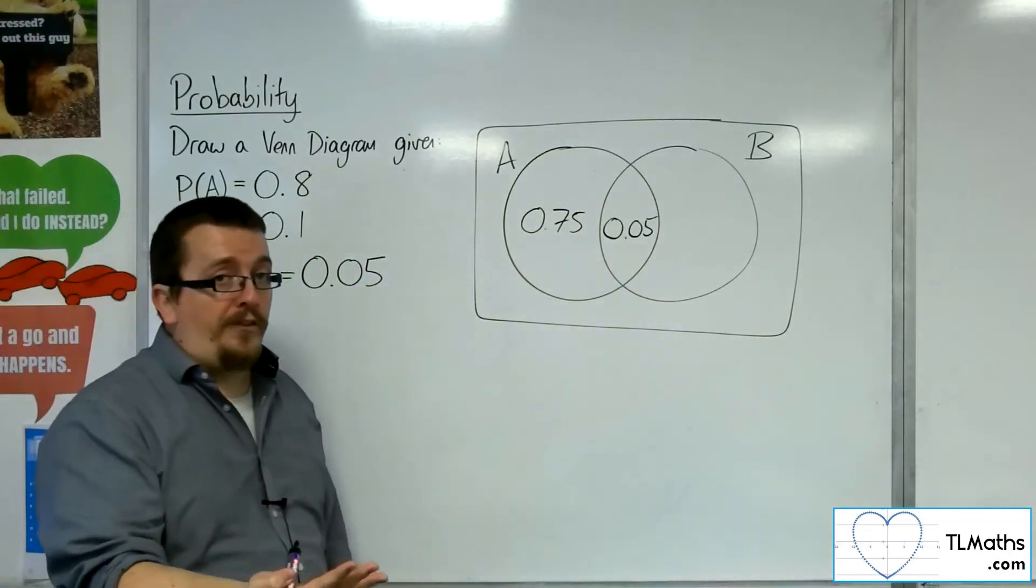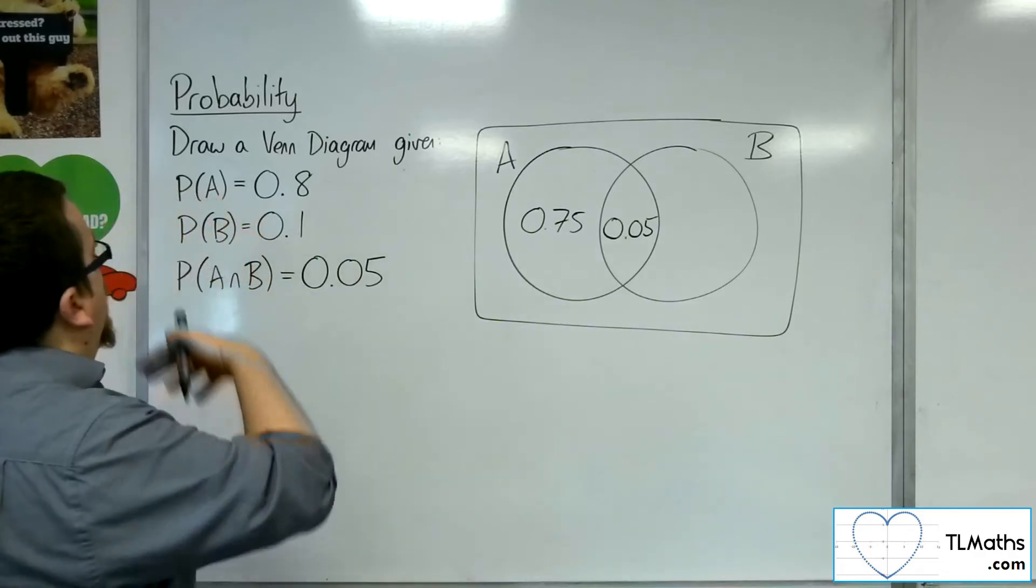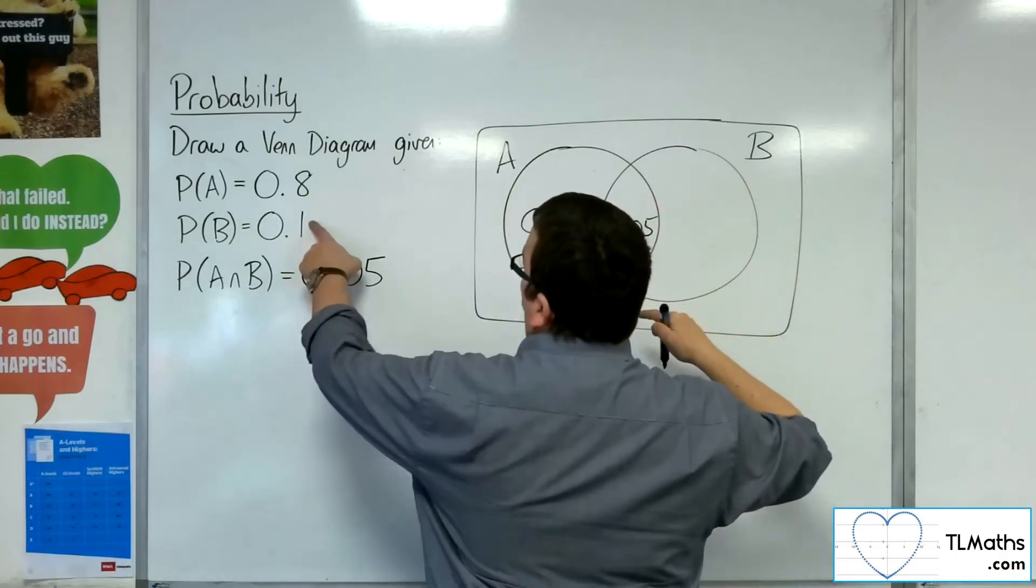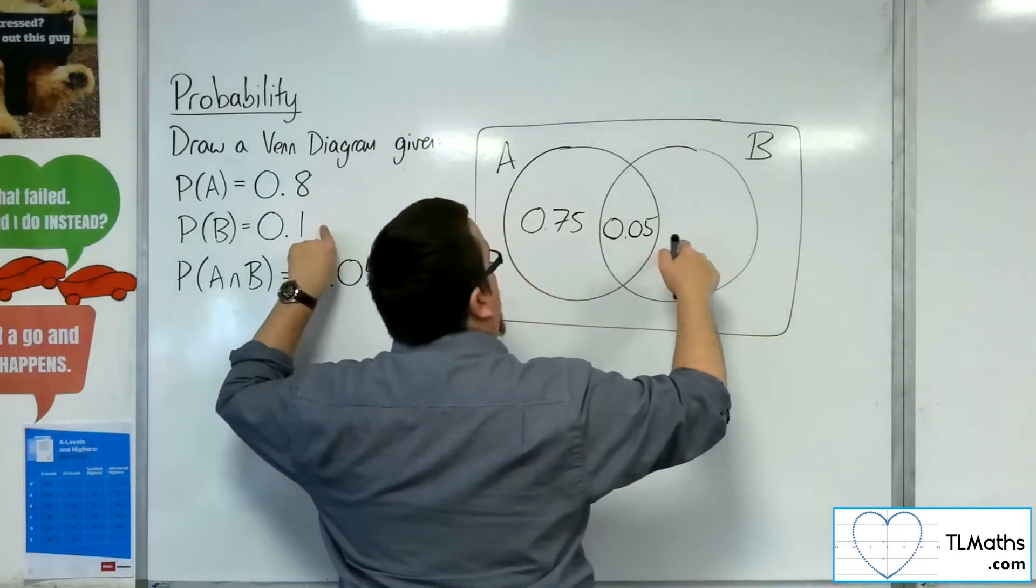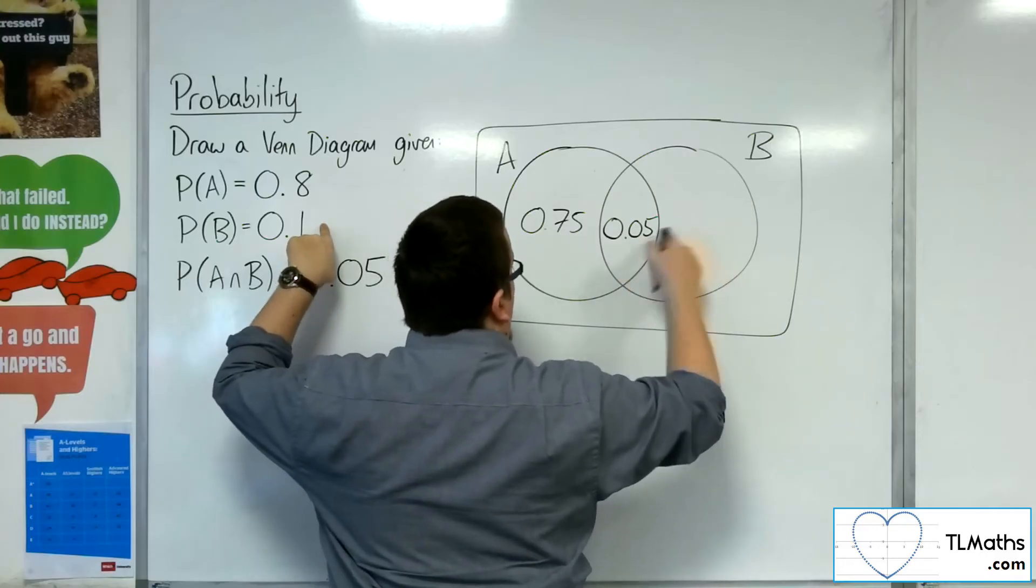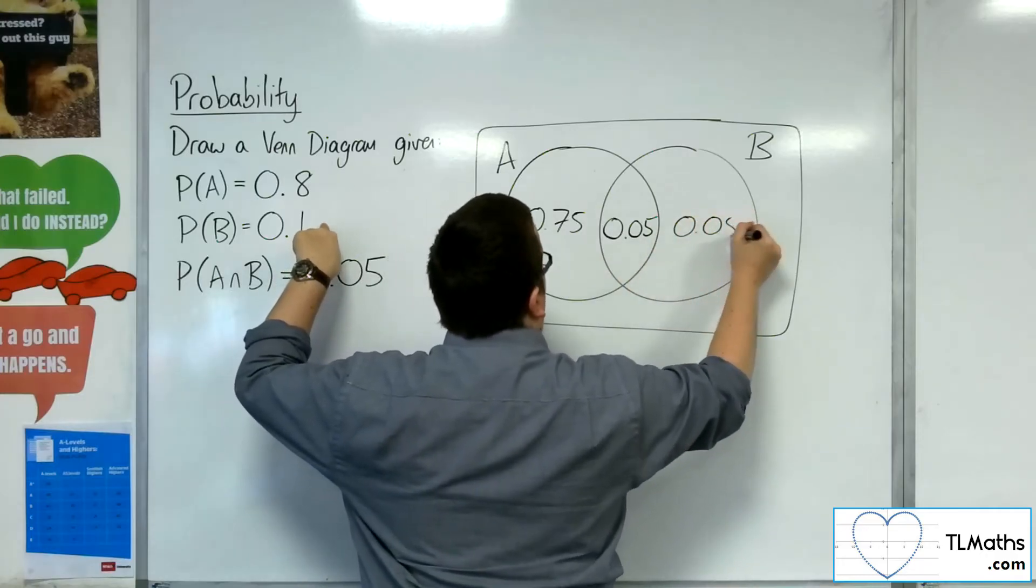That's why we've got to start in the middle. Then, for B, we know that all of that is 0.1. So that means that this missing probability here, these two must add up to 0.1, and so that must be 0.05.